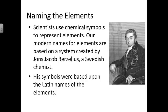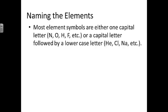How do we name the elements? Scientists use chemical symbols to represent the elements. Our modern names are based on a system created by Jons Jacob Berzelius, a Swedish chemist. His symbols were based upon the Latin names of the elements. Most element symbols are either one capital letter, such as N, O, H, or F, or a capital letter followed by a lowercase letter, such as He for helium, Cl for chlorine, Na, and others.